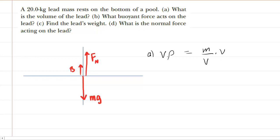So we'll multiply both sides of the equation by V, which cancels it on the right-hand side, and then we'll divide both sides by the density. We can see that volume is simply equal to the mass divided by the density.